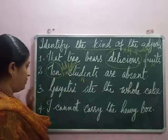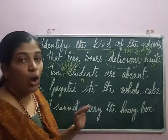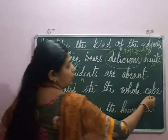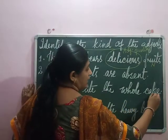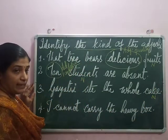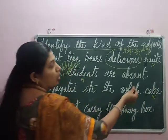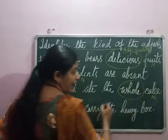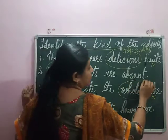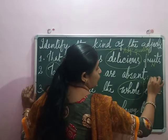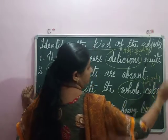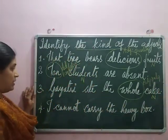Question number 3: Gayatri ate the whole cake. Here, the noun is cake. How much did she eat? Whole. We don't know the exact amount, so here it is adjective of quantity.